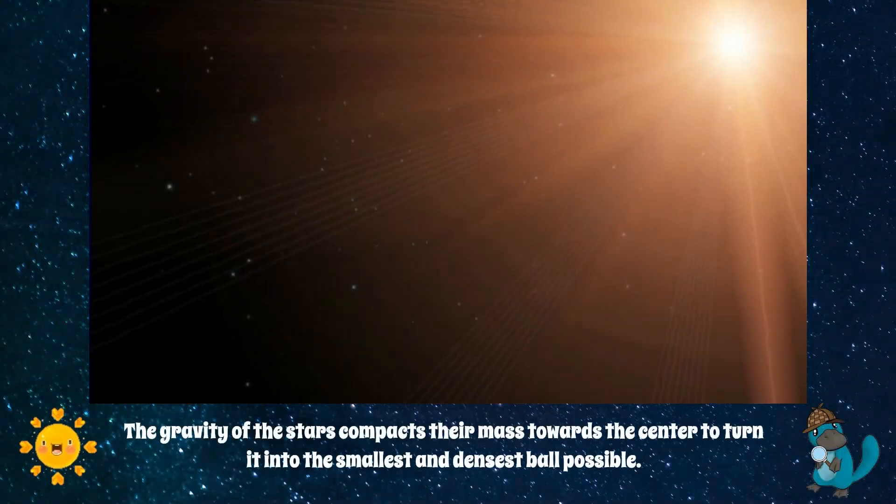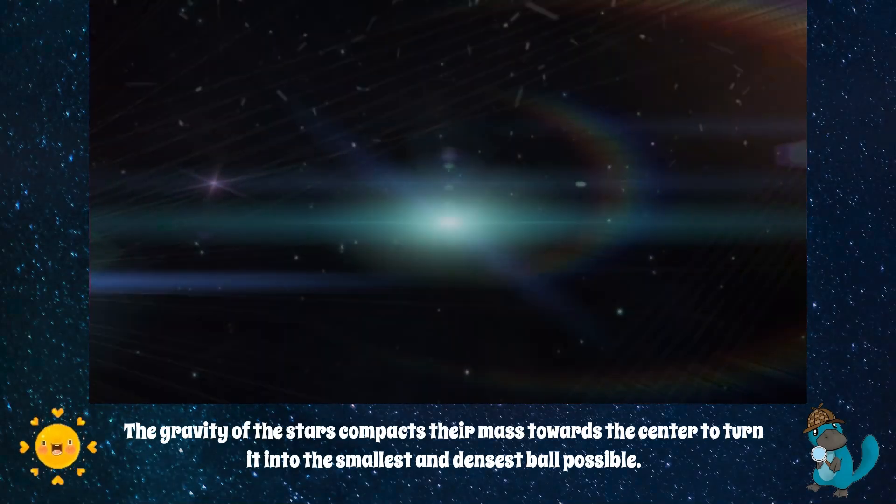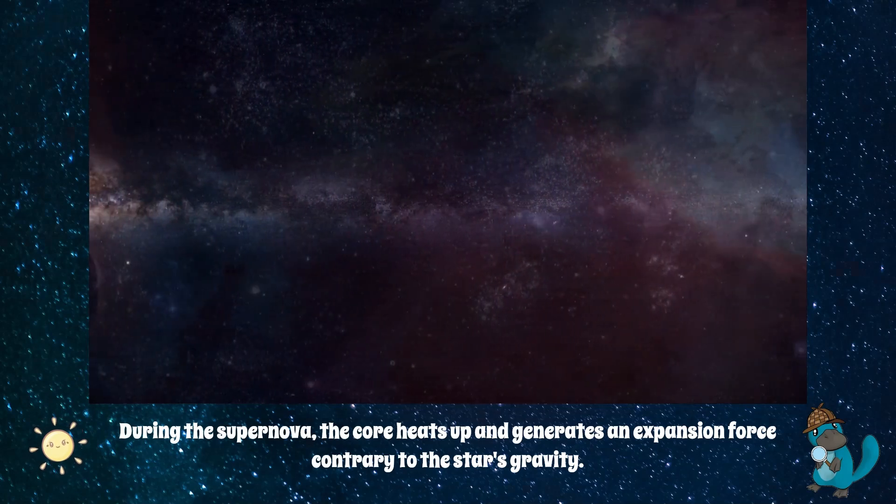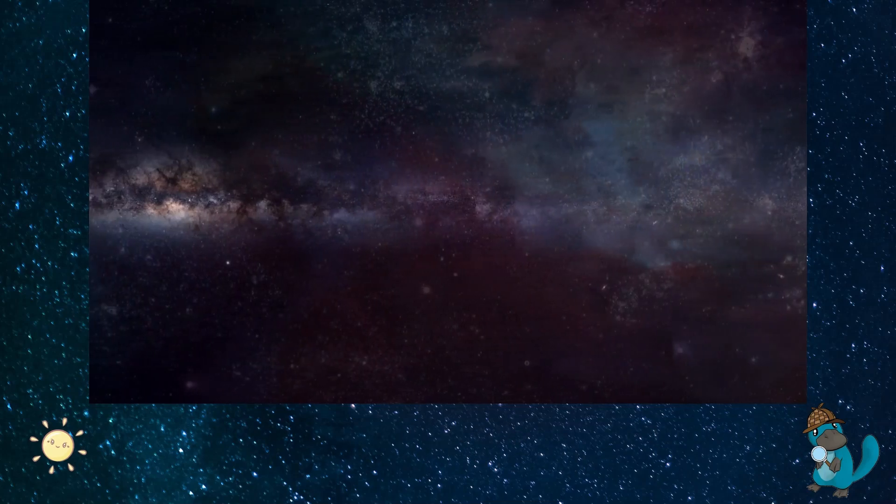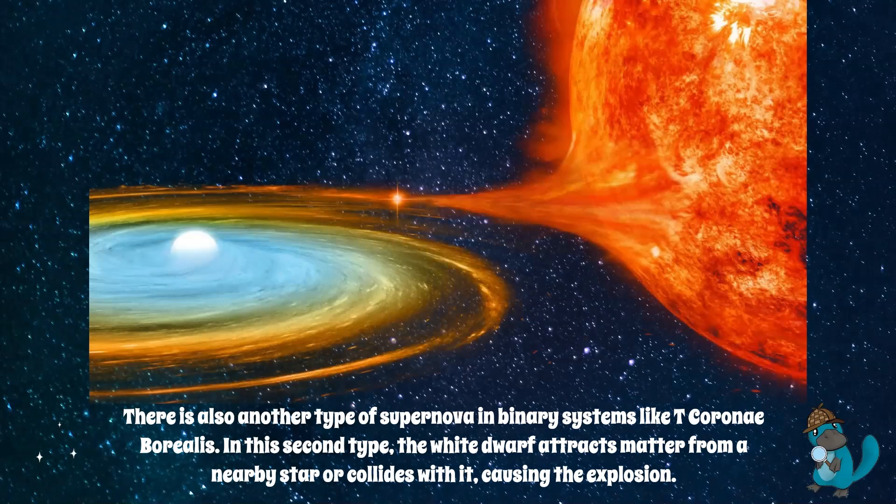The gravity of the stars compacts their mass towards the center to turn it into the smallest and densest ball possible. During the supernova, the core heats up and generates an expansion force contrary to the star's gravity. There is also another type of supernova in binary systems, like T. Coronae Borealis.